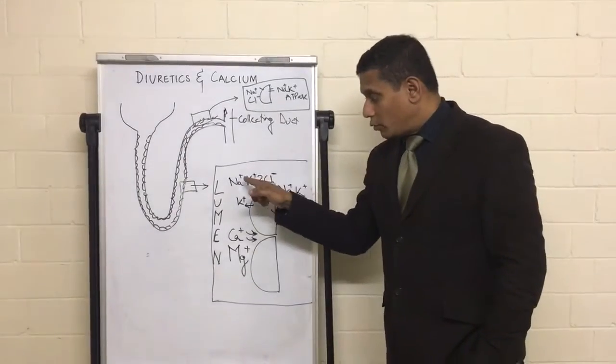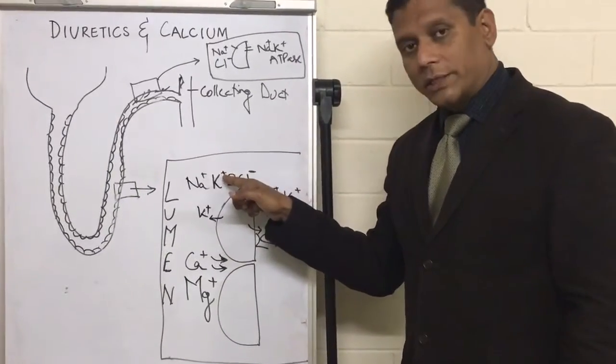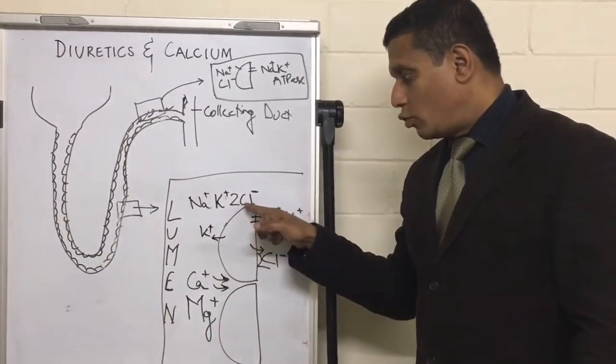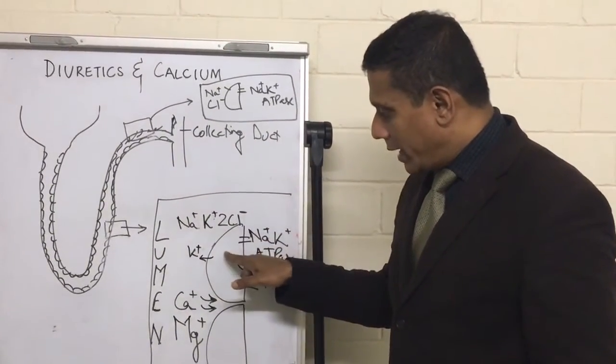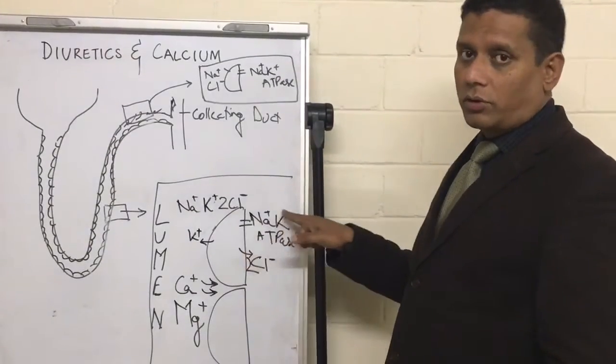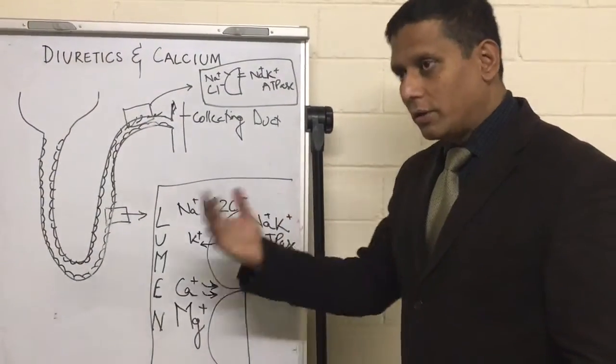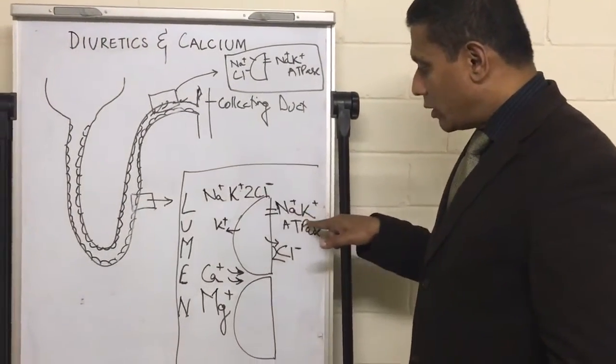Now this is electroneutral because there is one positive sodium and one positive potassium—that's two positive—and two negatively charged chloride. That makes it electroneutral, which is fine for the cell. As it comes in here, the sodium is chucked out towards the lumen of the body or the blood vessels by the sodium-potassium ATPase.